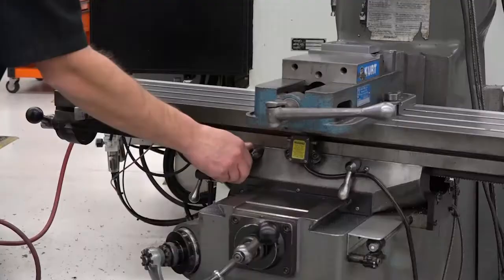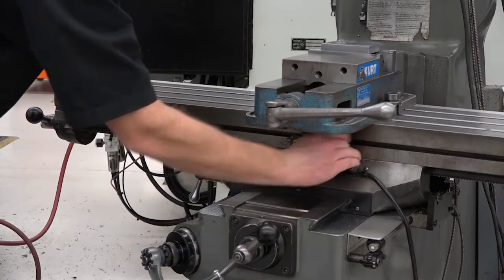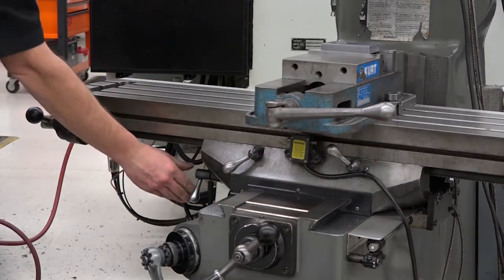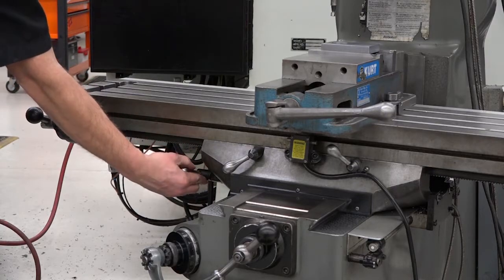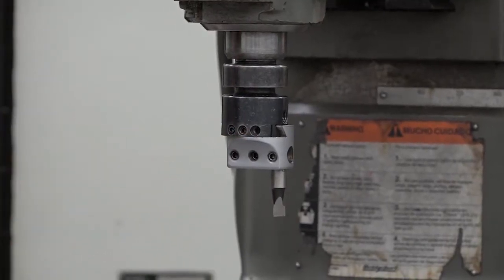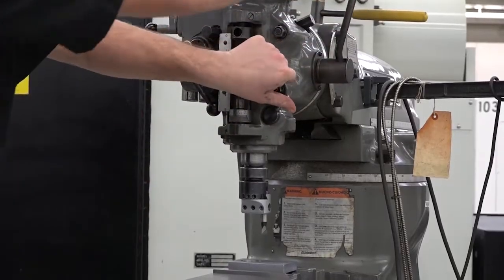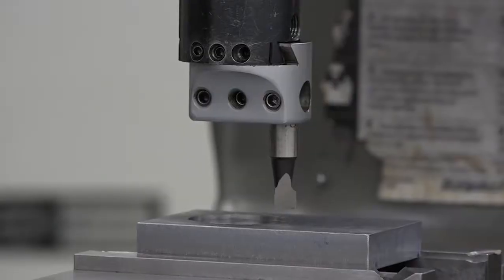Position the head where the hole needs to be and lock the x and y axes. Move the boring head until the set screws are facing you. Bring the quill down until the boring head is just above your workpiece.